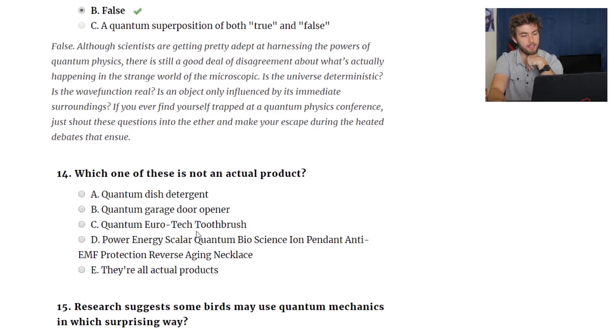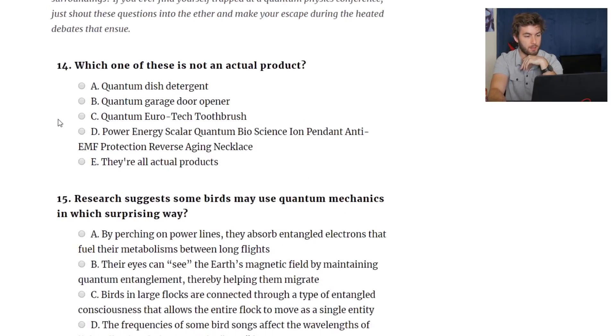Which of these is not an actual product? Quantum dish detergent, quantum garage door opener, quantum Eurotech toothbrush, power energy scaler, quantum bioscience ion pendant anti-EMF protection reverse aging necklace. What? Or they're all actually products. Here's the thing. I wouldn't put it past any marketing agency or whatever it is that decides on the name of a product to throw quantum in there in order to make people think that it works better or something. But power energy scaler, quantum bioscience, that whole thing sounds way too complicated. I feel like that would hurt. I feel like that would be a terrible marketing name because that would just, it's frustrating to read. There's no way. I highly doubt that there's something called that.